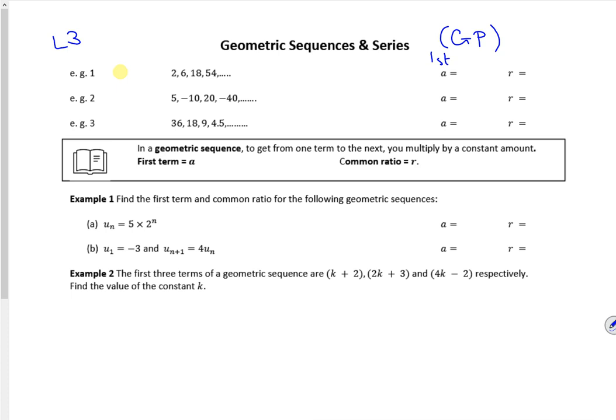So for these three examples, r is the common ratio, it's what you multiply by. And the easiest way to work it out if it's not obvious is to do a term divided by the term before it. So maybe 6 over 2, so we know r is 3. Or minus 10 over 5, so we know r is minus 2. Or 18 over 36, so we know r is a half.